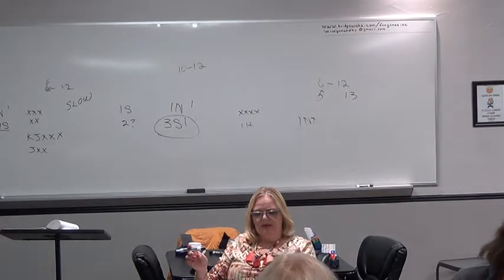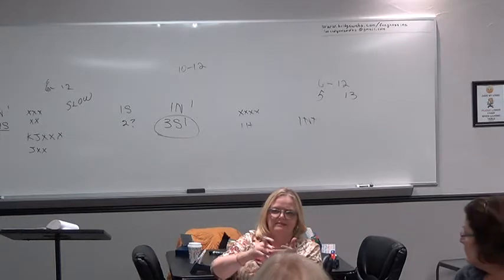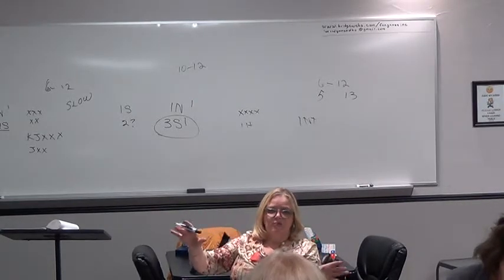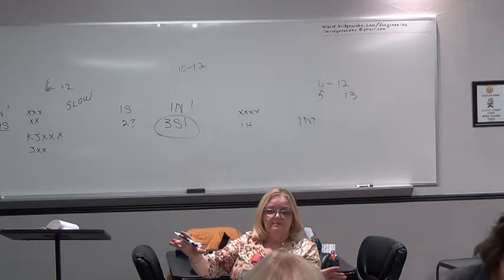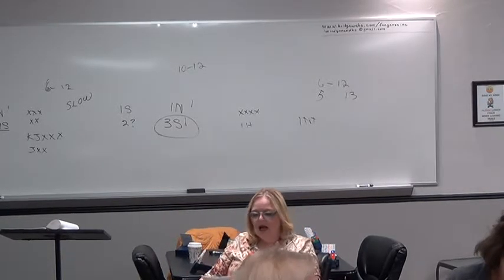Because the one no-trump allows us then to differentiate between the six, seven, eight, maybe even nine and the ten, eleven, twelve point hands. The minimum or the invitational. Okay.